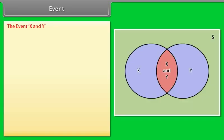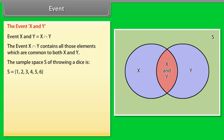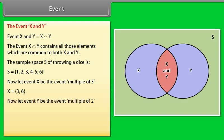The event X and Y equals X intersection Y. The event X intersection Y contains all those elements which are common to both X and Y. The sample space of throwing a dice is S = {1, 2, 3, 4, 5, 6}. Let event X be 'multiple of 3': X = {3, 6}. Let event Y be 'multiple of 2': Y = {2, 4, 6}. The event X intersection Y = {6}.